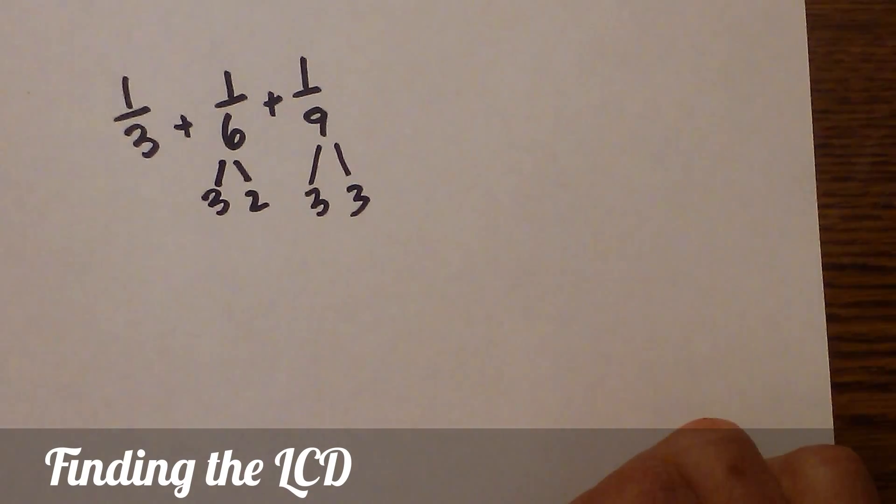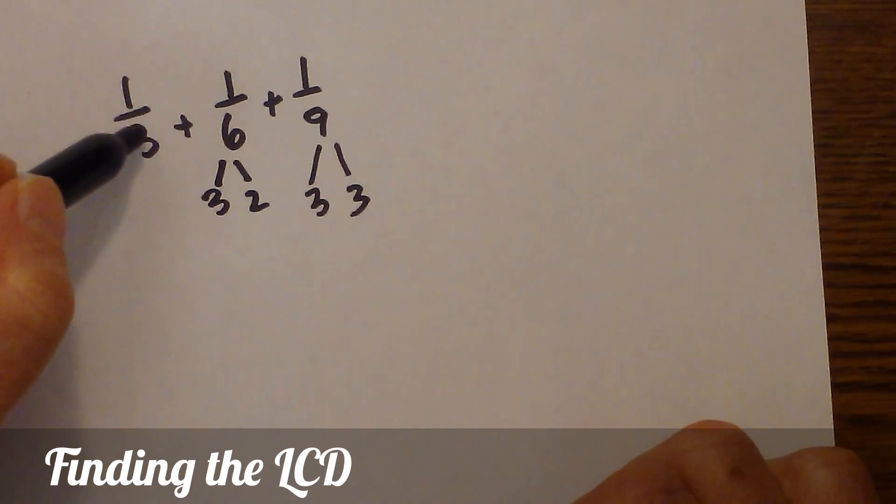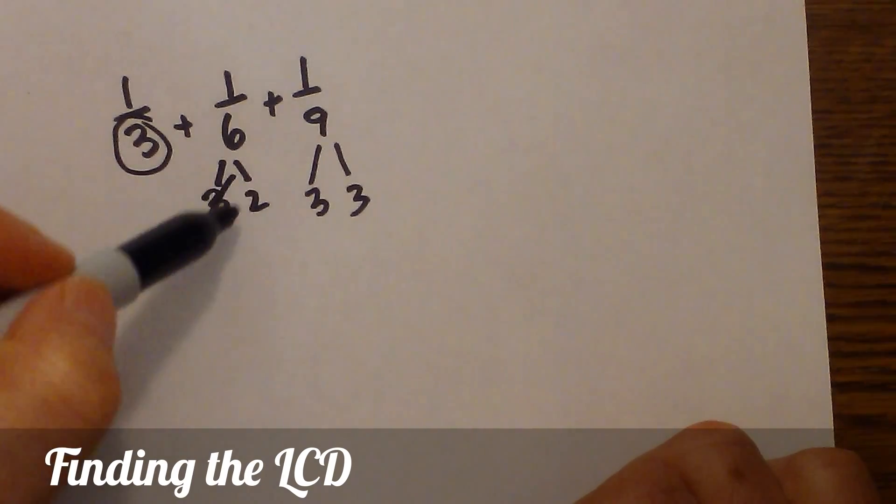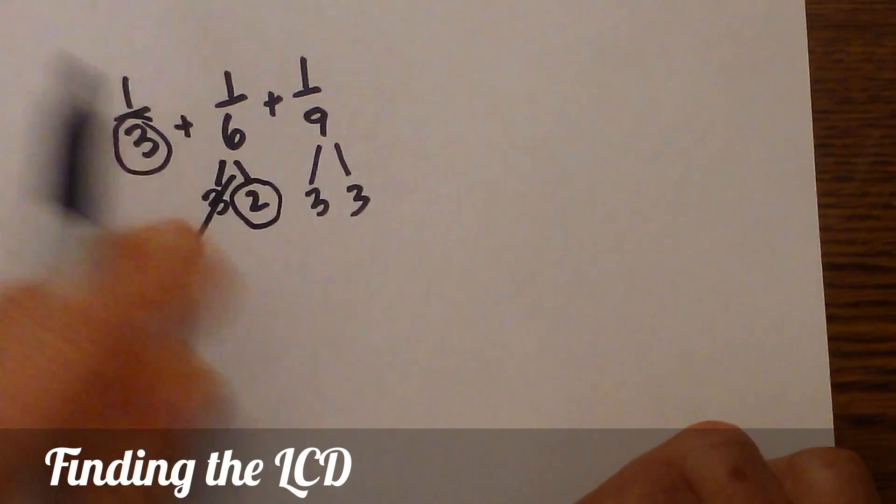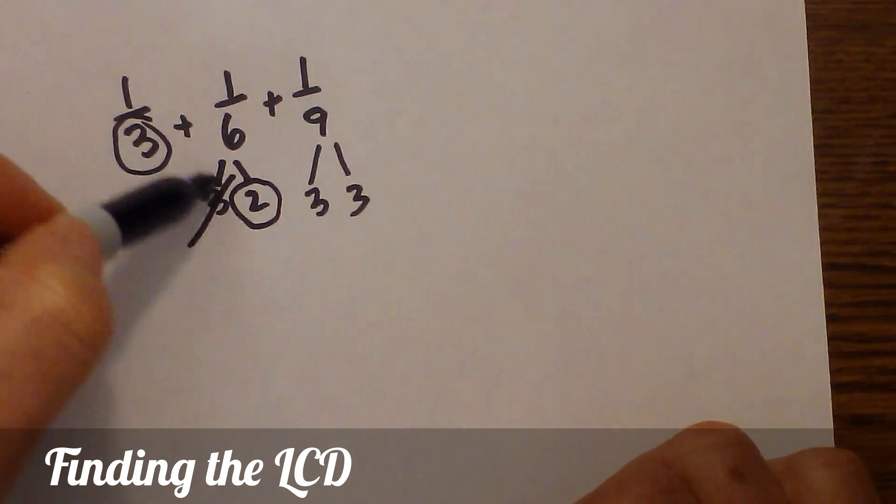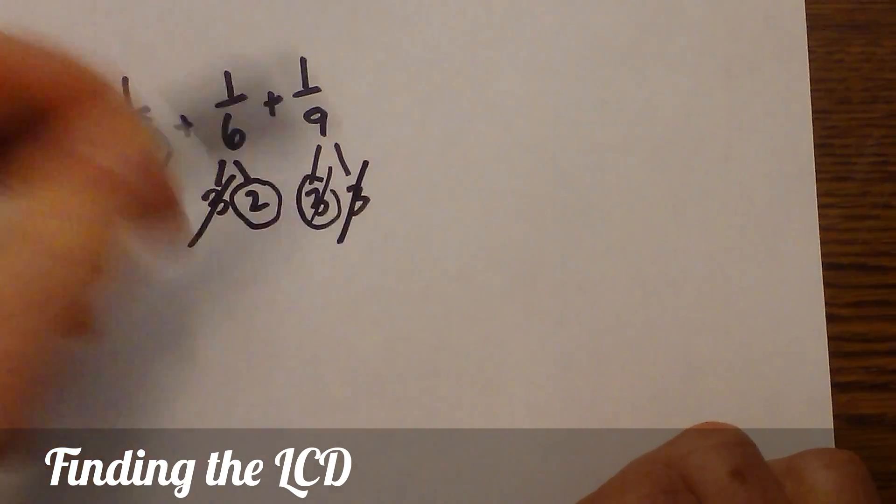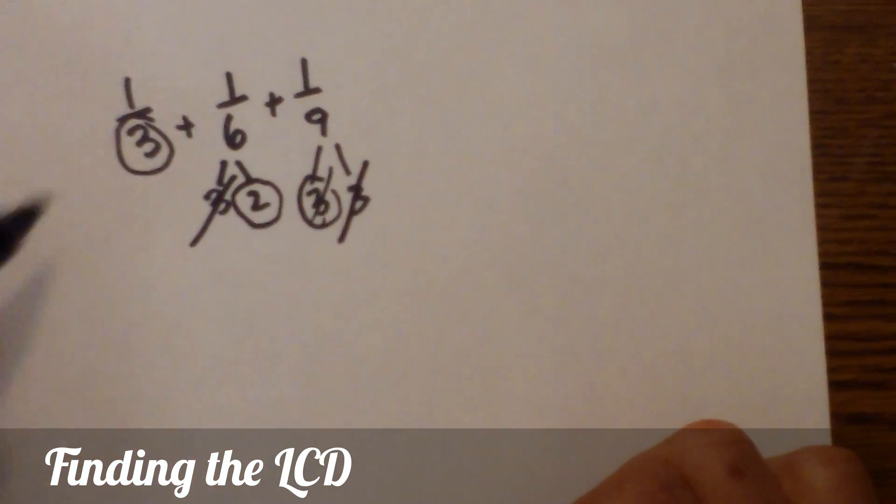Now I go through the same process. Anytime I have more than one, I circle one and cross out the other. There's not another two, so I will circle it. Circle one and cross out the other.